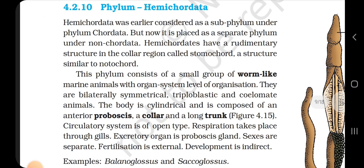4.2.10 Phylum Hemichordata. Hemichordata was earlier considered as a subphylum under Phylum Chordata, but now it is placed as a separate phylum under non-Chordata. Hemichordates have a rudimentary structure in the collar region called stomochord, a structure similar to notochord. This phylum consists of a small group of worm-like marine animals with organ system level of organization. They are bilaterally symmetrical, triploblastic and acoelomate animals. The body is cylindrical and composed of an anterior proboscis, collar and a long trunk. Circulatory system is open type. Respiration takes place through gills. Excretory organ is the proboscis gland.